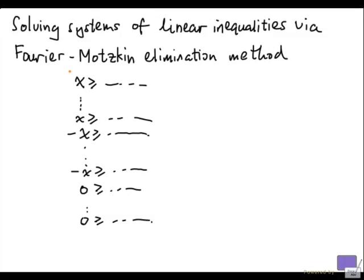The method is based on the following observation. Suppose I have a system of inequalities where every inequality is greater than or equal to. Pick a variable, put it on the left-hand side, and everything else — constants and other variables — on the right-hand side. Rewrite the system in this manner and normalize the coefficients of x so that the coefficient of x is either 1 or minus 1.